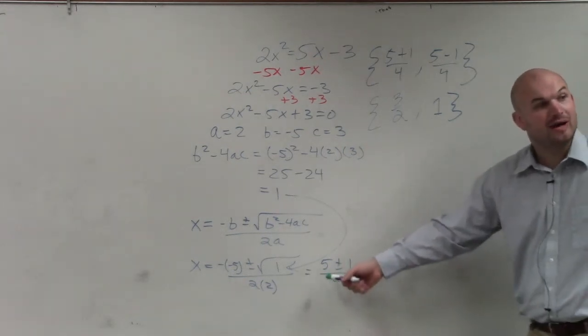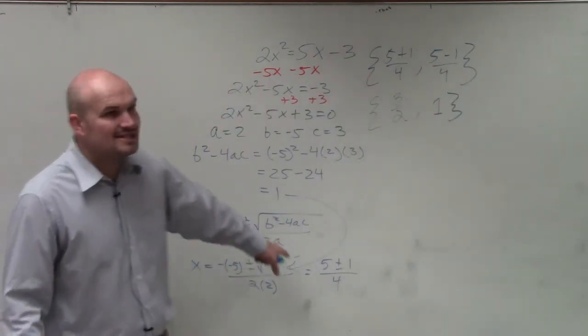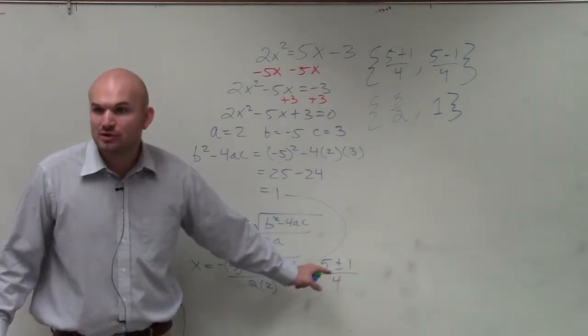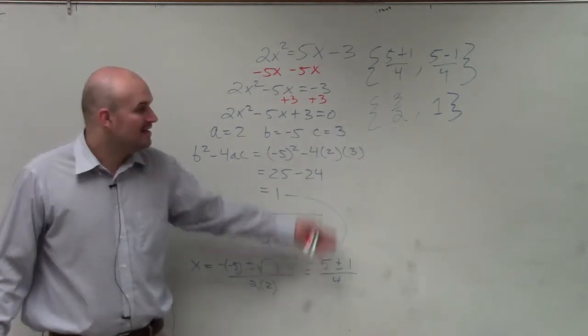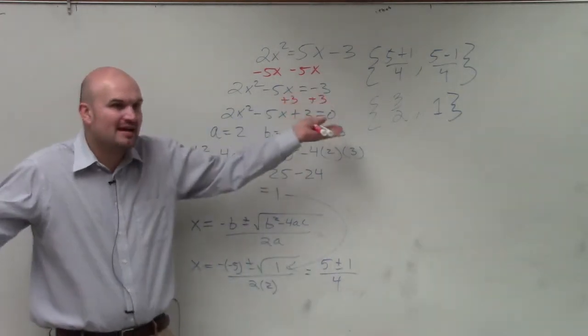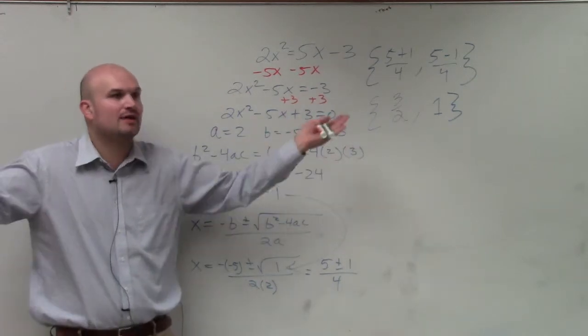So obviously, ladies and gentlemen, when you have two real rational solutions, you can simplify that into actual numbers. But when you have the irrational, the answer had to stay irrational. So that's why we left that square root in there, because we can't evaluate for the square root.